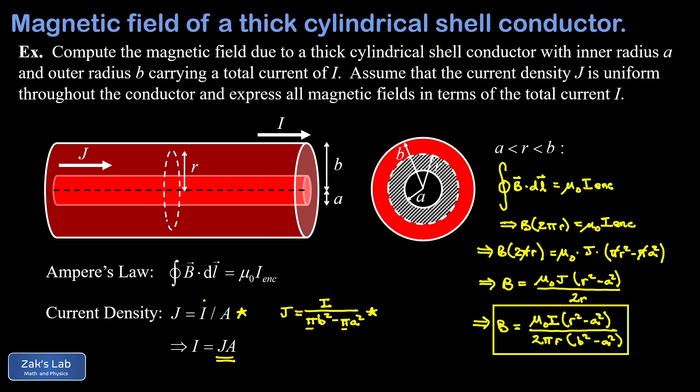To summarize: the magnetic field inside the cavity (r < a) is zero; outside the outer radius (r > b) it's the classic μ₀I / 2πr; and in the in-between region it's μ₀I(r² − a²) / [2πr(b² − a²)]. In the next video we'll solve another thick conductive shell problem but with a non-uniform current density dropping off like 1/r. A link to that video will be posted at the upper left when it's done.